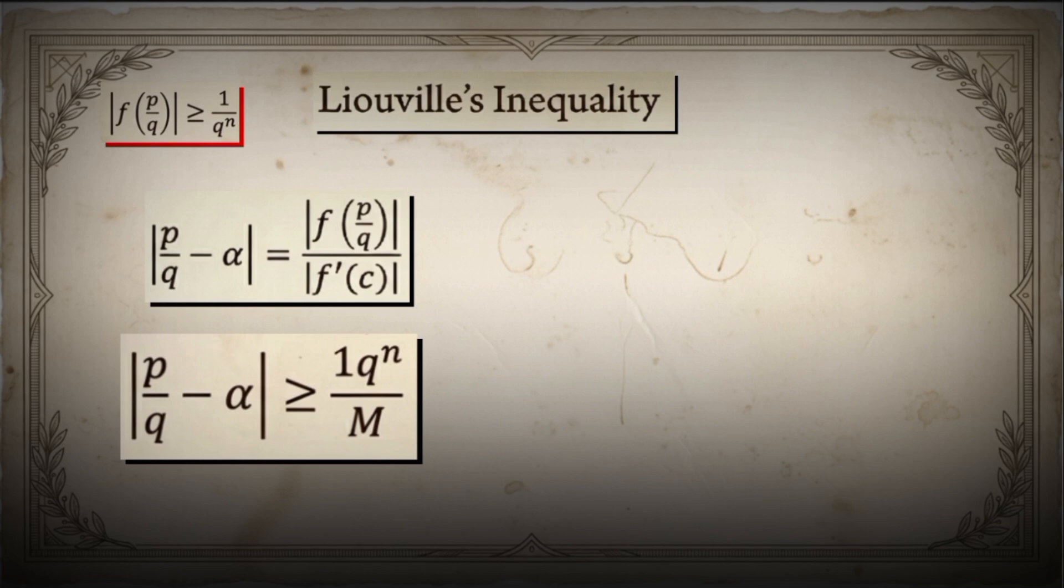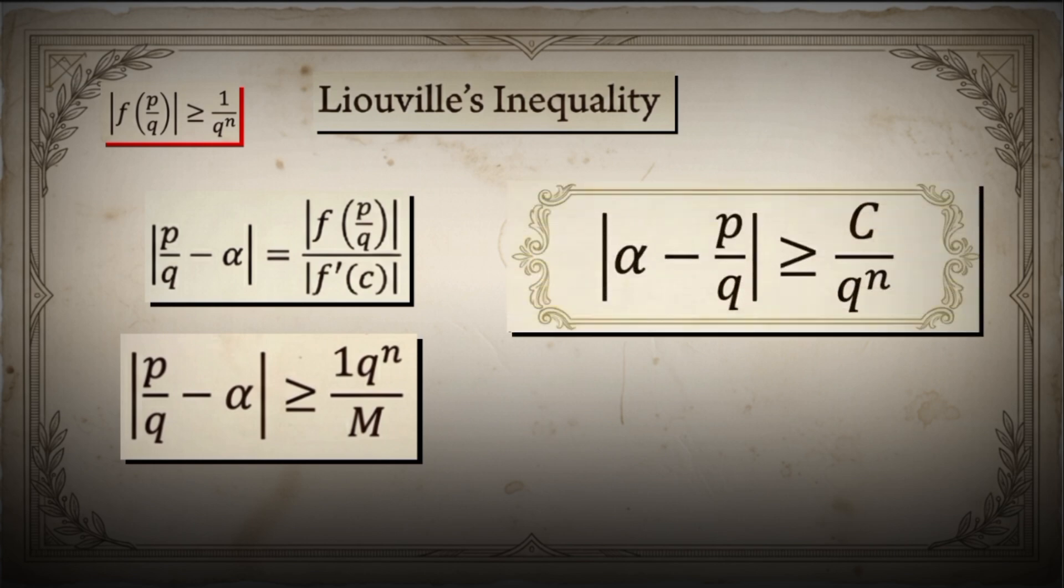Liouville's inequality. The absolute value of alpha minus p over q is greater than or equal to c over q to the power n, where c is a constant depending on alpha.